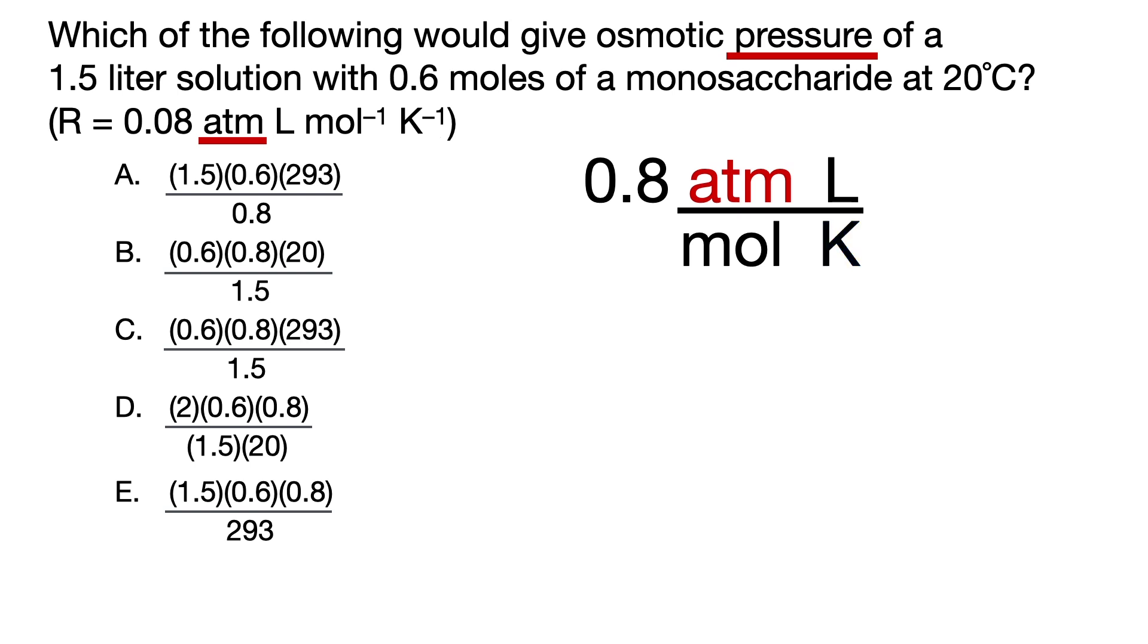Since the units have Kelvin and we're given 20 degrees Celsius in the question stem, we can narrow down our answer choices to A, C, or E because we'd have to add 273 to 20 degrees Celsius in order to convert it to Kelvin, which eliminates B and D because they still have 20 degrees Celsius.